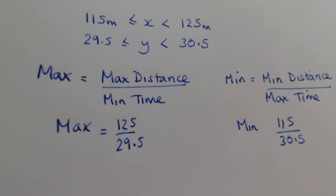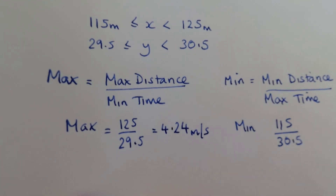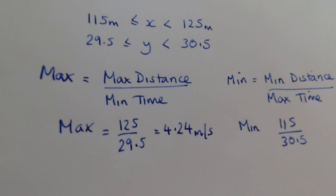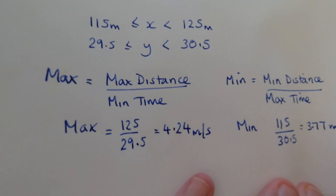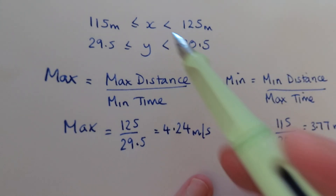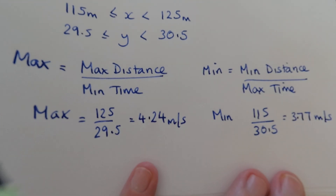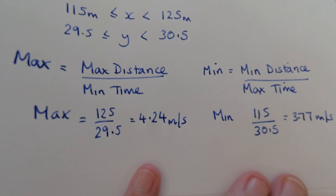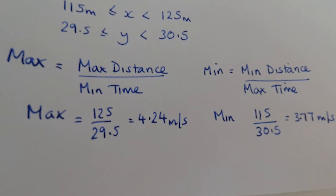The maximum speed works out to 4.24 meters per second (rounded to two decimal places), and the minimum speed is 3.77 meters per second. This error is caused by very small errors in measuring. Remember: when you divide you use opposites — max divided by min, and min divided by max — and when you multiply you use the same: max times max and min times min. Have a go at lesson three!